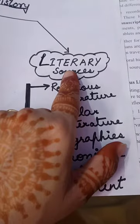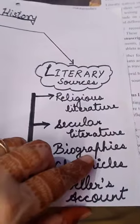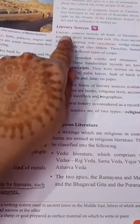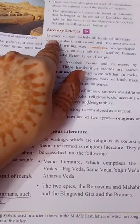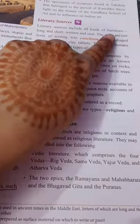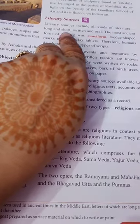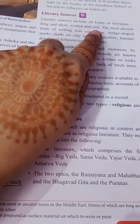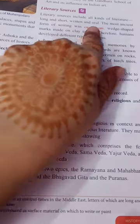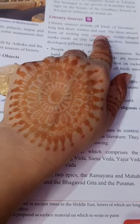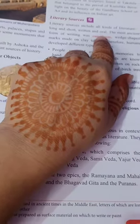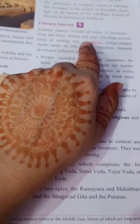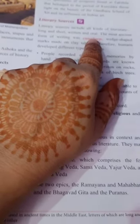Literary sources include all kinds of literature, long and short, written or oral. It can be in the form of songs, bhajans, and similar forms — all of these are called literary sources.